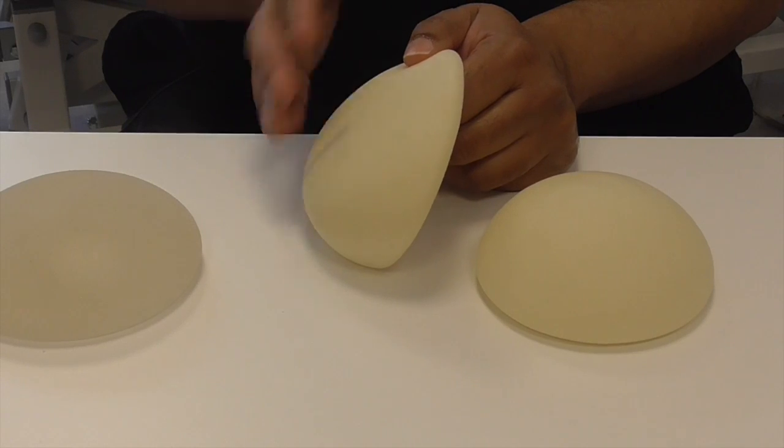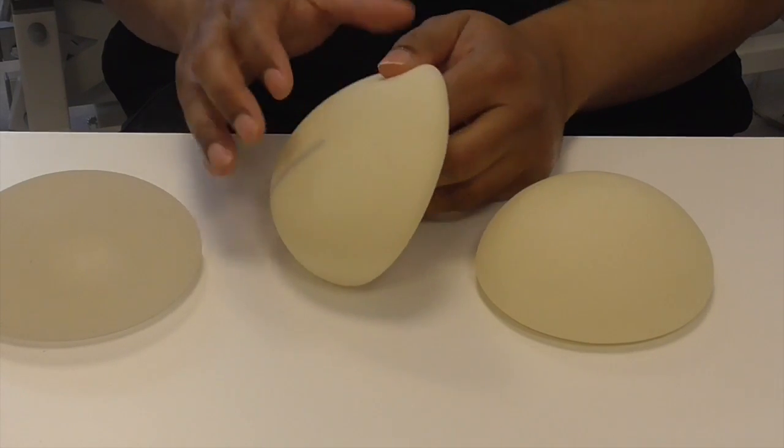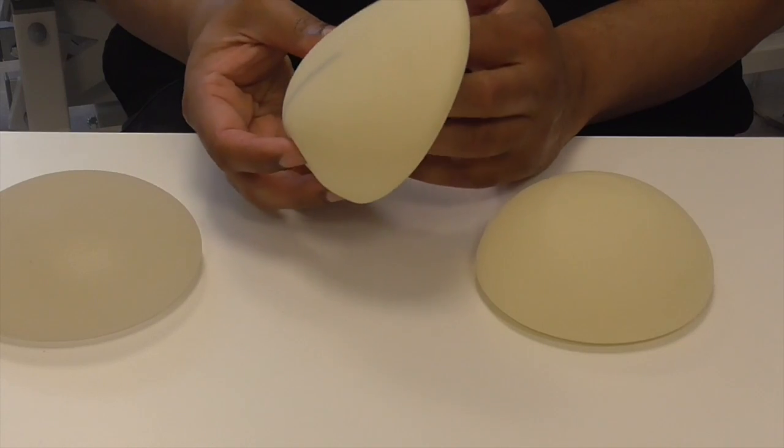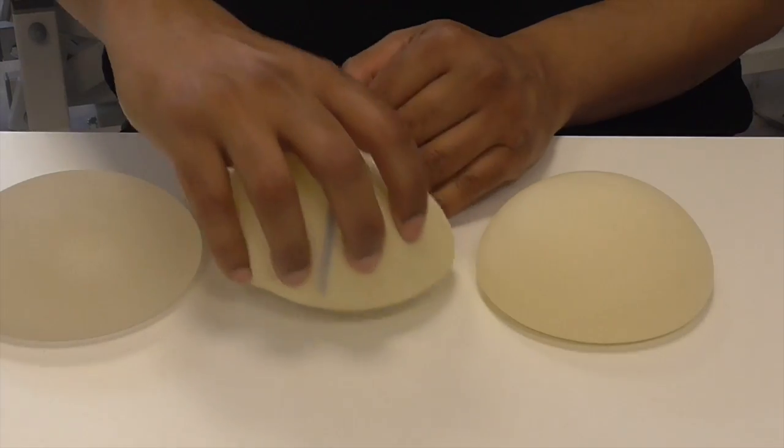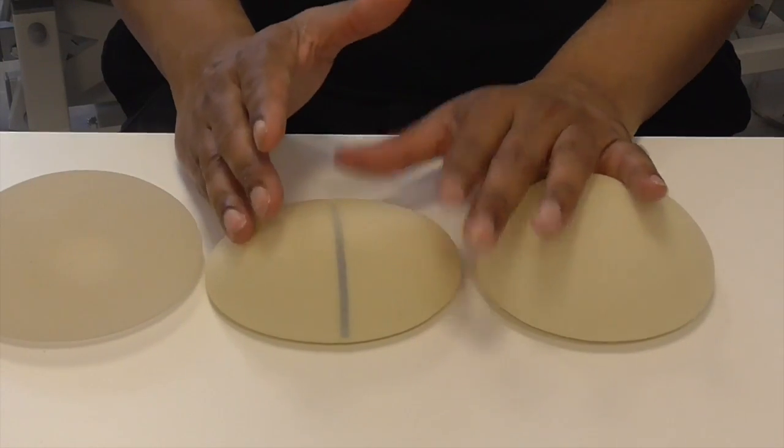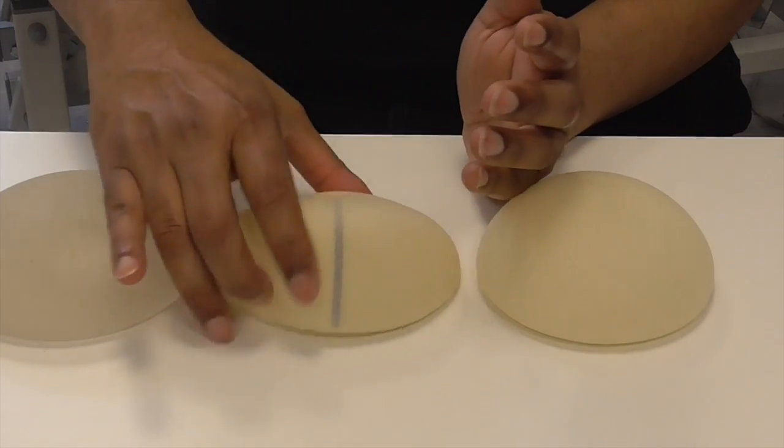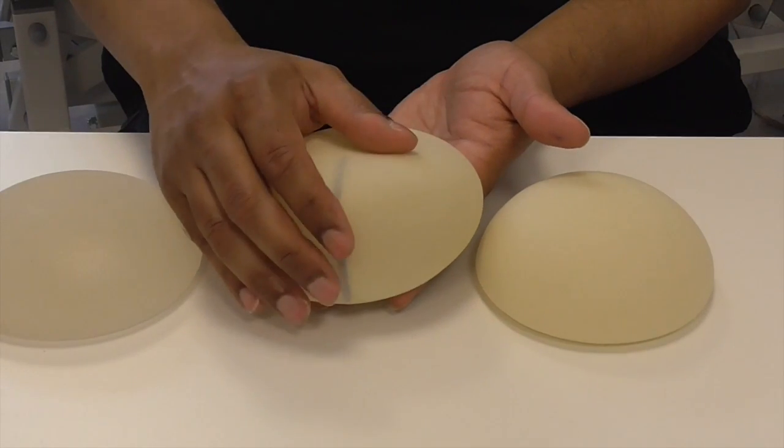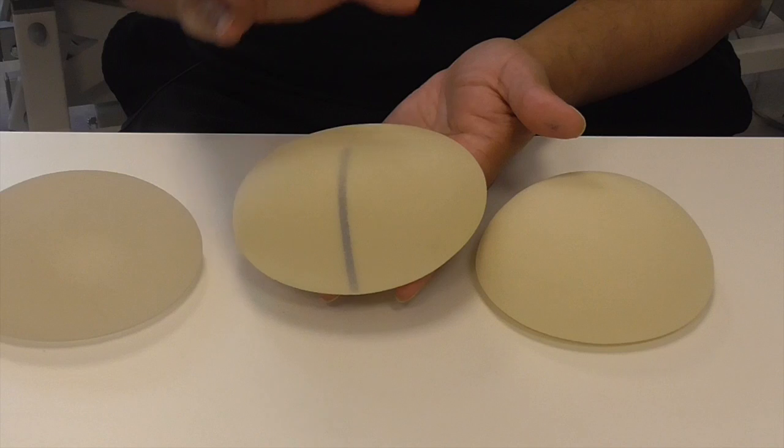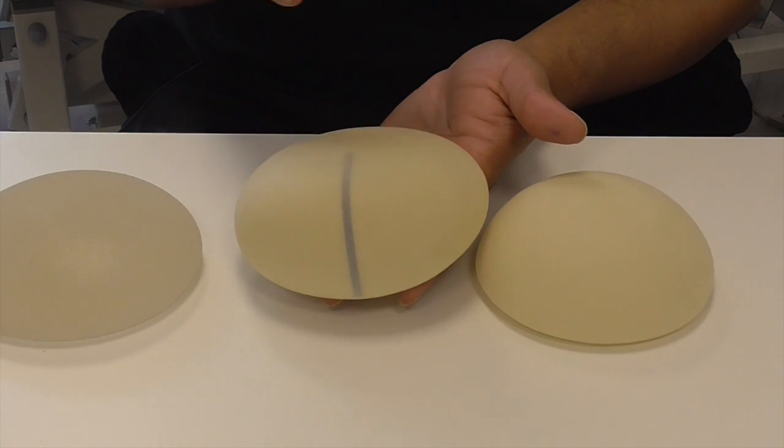If you compare the round to the anatomical, especially in a side view, it's got this what is known as a teardrop shape. This teardrop shape gives one a better breast shape, a better natural shape. If you're putting this implant under the breast tissue, the teardrop shape will probably give you the best outcome, but that's very dependent on the patient and the surgeon and what they're trying to achieve in terms of the aesthetic outcome.